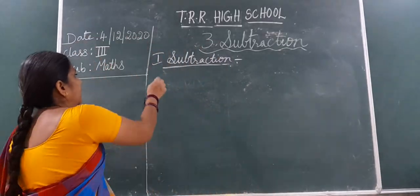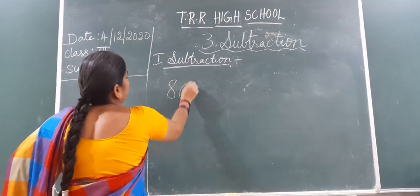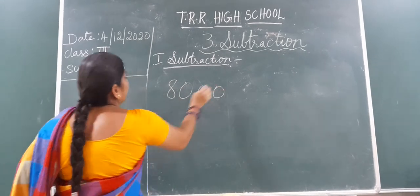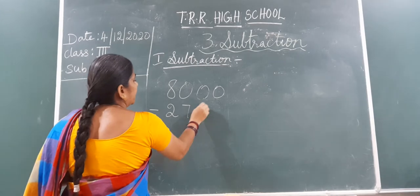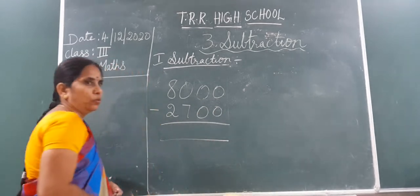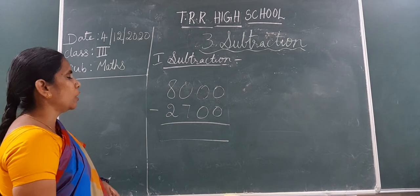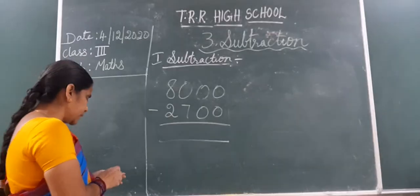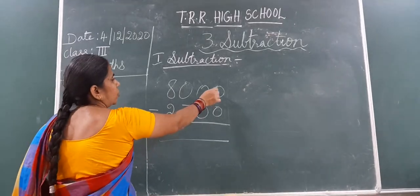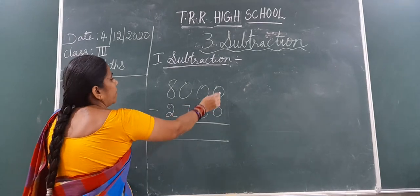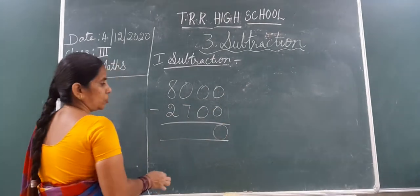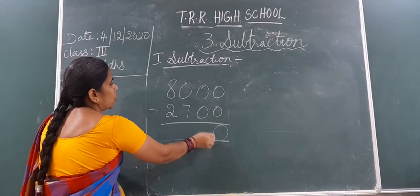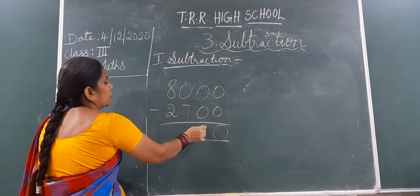Here, here I am giving 8000, 8000 minus 2700. If like this it is there, what you will do? You must start subtracting from the ones place. Already you all know. 0 minus 0. Both zeros are there? Definitely the answer also will be 0. So, go to the tens. Here 0 minus 0 is 0.